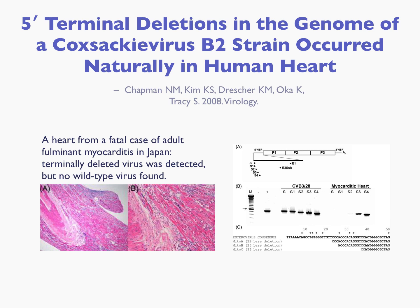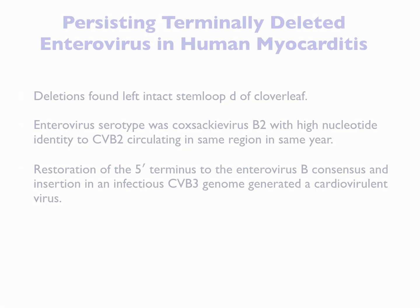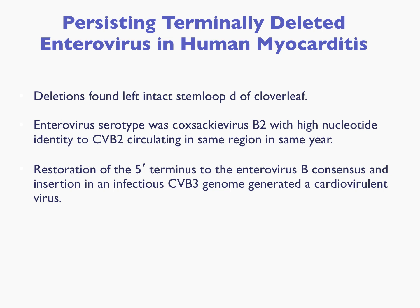We found that we could detect the same type of deletions in the same region in this human case. We were pleased to find that this was a modern CVB2 strain with a closest relationship to a CVB2 circulating in the same year in the same region of Japan. We weren't able to go beyond a third of the genome from this formalin-fixed tissue, but we were able to show it was indeed Coxsackievirus B2. This showed us that it didn't have to be a prototype laboratory strain — modern Coxsackievirus B2 had also already gone to terminal deletion within 14 days.